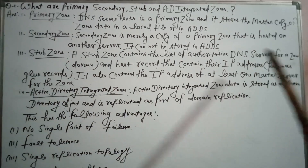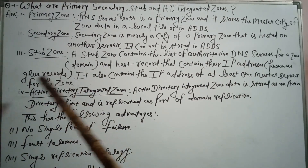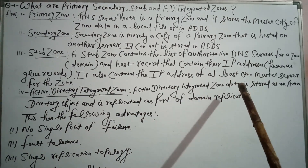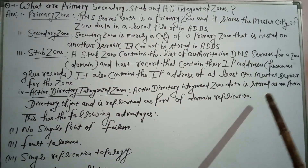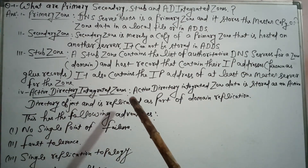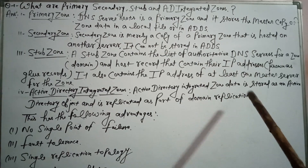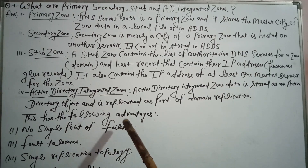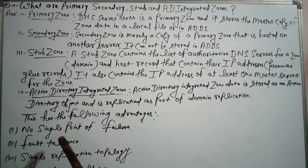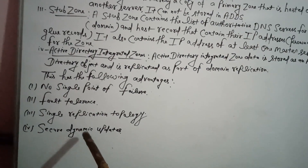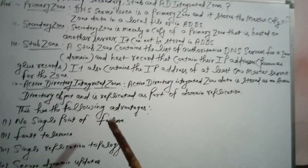Number four: AD Integrated zones. An Active Directory integrated zone is one where zone data is stored as an Active Directory object and is replicated as part of domain replication. This has the following advantages: number one, no single point of failure; number two, fault tolerance; number three, single replication topology; and number four, secure dynamic updates.